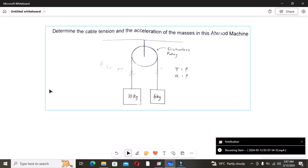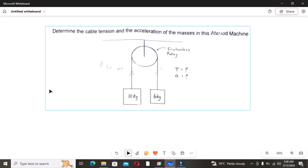Hi guys, welcome to my channel. In today's tutorial I will address the physics problem that has been troubling A-level physics students for some time now. This problem is on Newton's second law of motion, the Atwood's machine problem. So let us look at the problem. The problem says determine the cable tension and the acceleration of the masses in this Atwood machine.